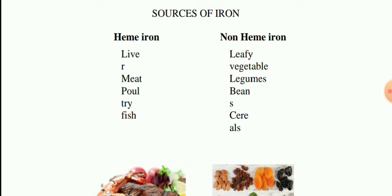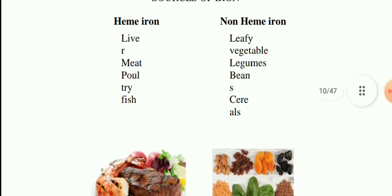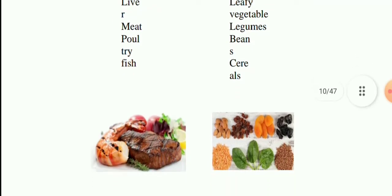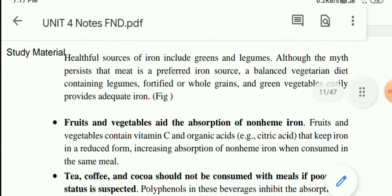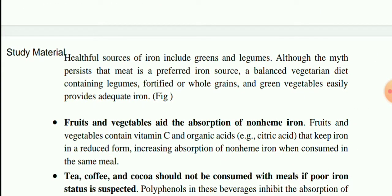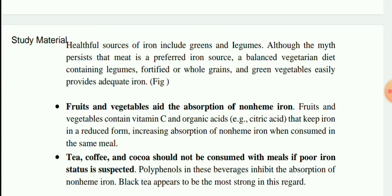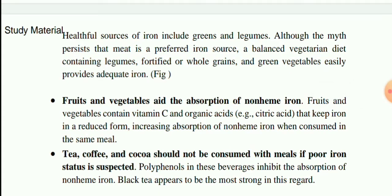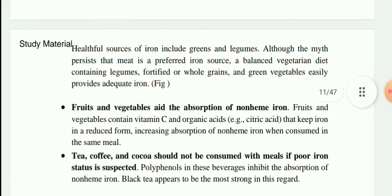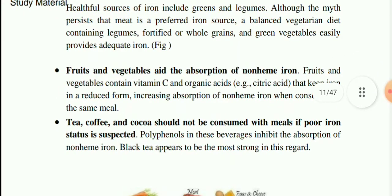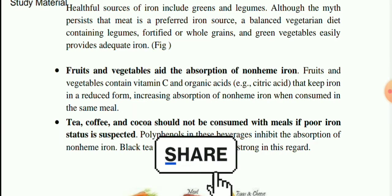Heme iron is found in liver, meat, poultry, and fish. Non-heme iron is found in leafy vegetables, legumes, beans, and cereals. Healthful sources of iron include greens and legumes. A balanced vegetarian diet containing legumes, fortified or whole grains, and green vegetables can easily provide adequate iron. Fruits and vegetables contain vitamin C and organic acids that keep iron in reduced form, increasing the absorption of non-heme iron when consumed in the same meal.